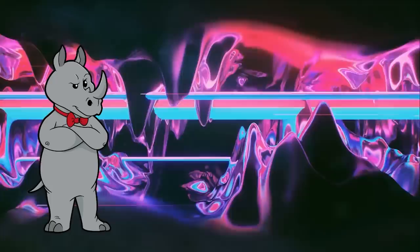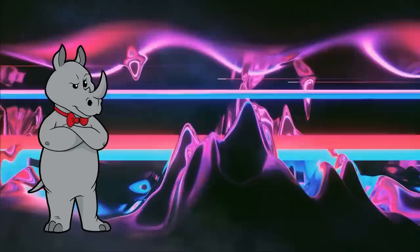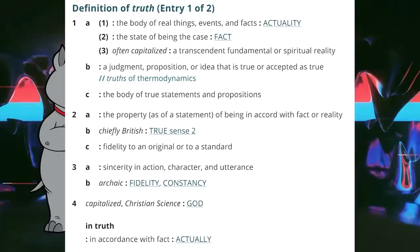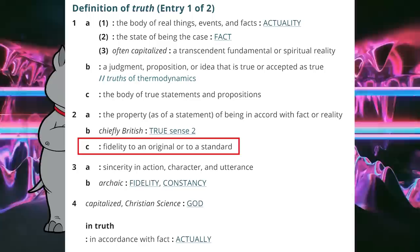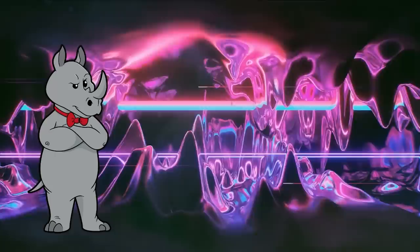Truth is that which has fidelity to an original or to a standard. But in order to get there, you had to go to definition 3C, which is the tertiary definition of the tertiary definition of truth. Mine is a combination of definition 1A1 and 2A — the primary definition of the primary definition along with the primary definition of the secondary definition. Actually, your definition is the tertiary definition of the secondary definition — it's 2C. You just mislabeled it in your video.